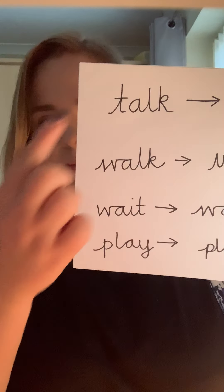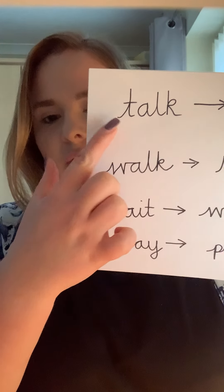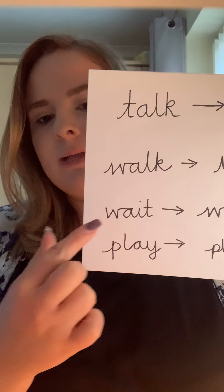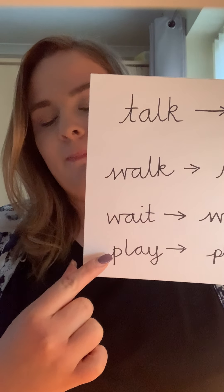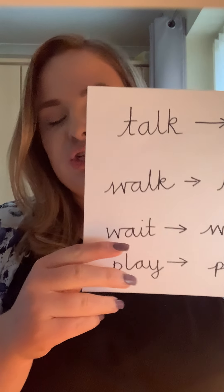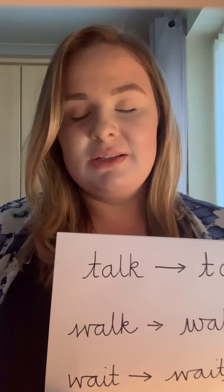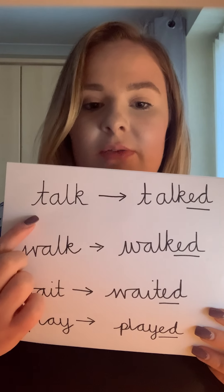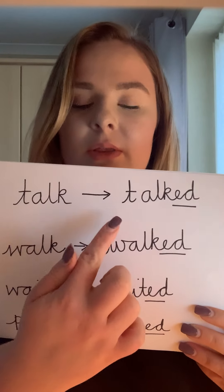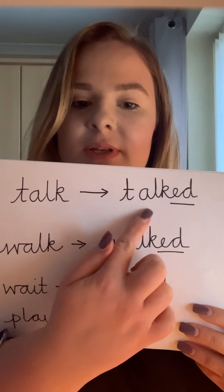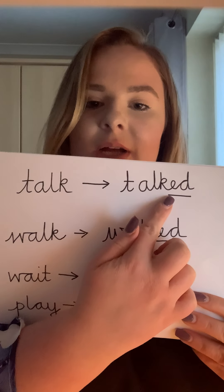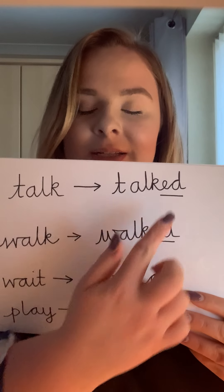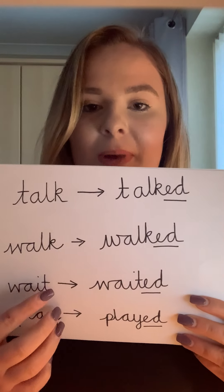I have got some verbs here: talk, walk, wait, and play. To change them into the past tense, we are going to use the suffix "-ed". As you can see, I've got "talk" — the start of it stays the same, but I'm just adding "-ed" to change it to the past tense.